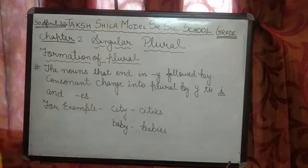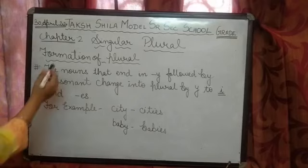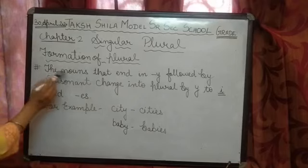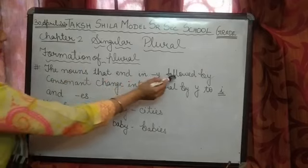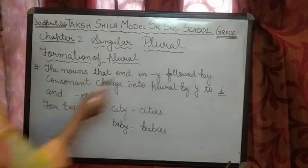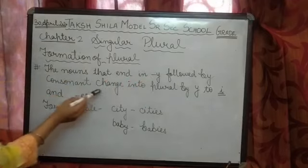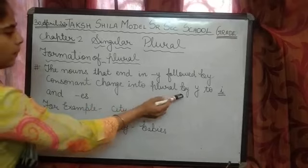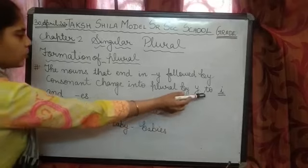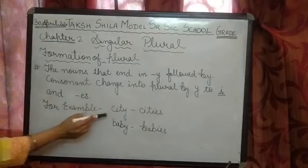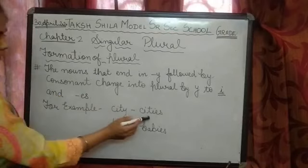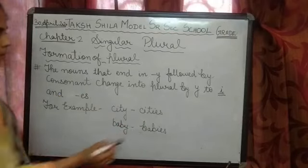Now there are some more rules to change singular into plural. Formation of plural: nouns that end in Y followed by a consonant change into plural by changing Y to I and adding ES. For example, city becomes cities, baby becomes babies.